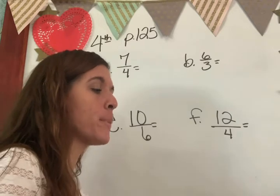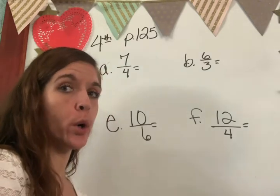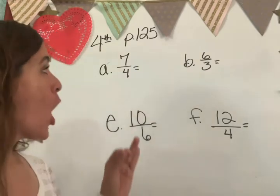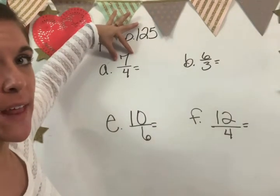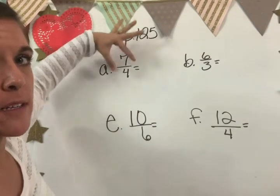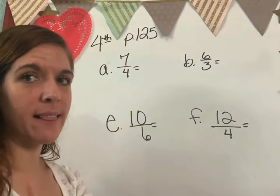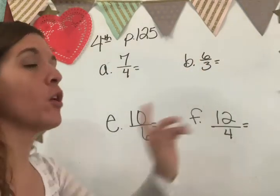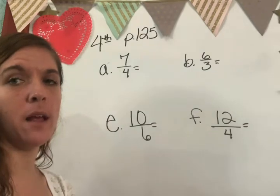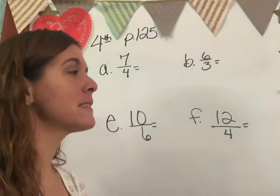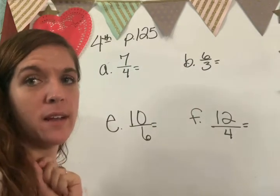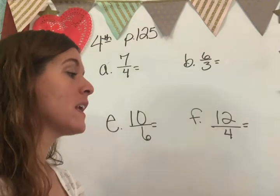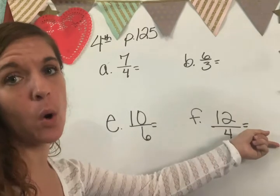Change these improper fractions to mixed or whole numbers. Let's remember what all those words mean. Remember improper fractions are the fractions that have a numerator that is bigger than a denominator. The top number is bigger than the bottom number and we can't leave it like that. So we have to divide because these also mean fractions and divide all at the same time.